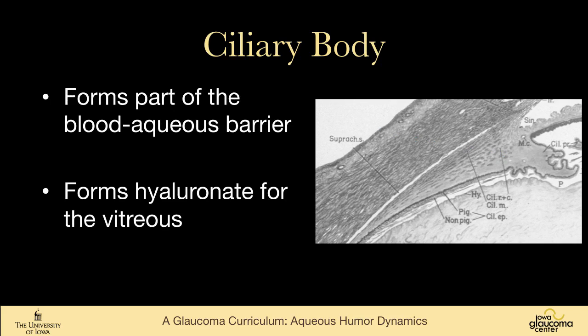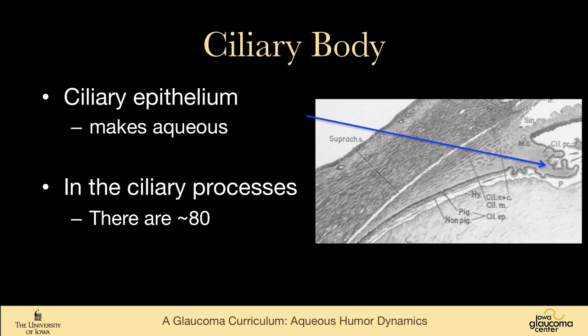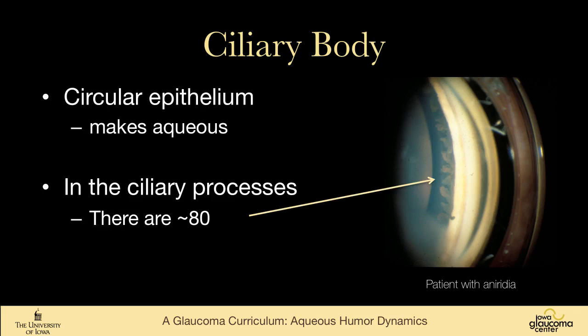The ciliary body is part of the blood-aqueous barrier, and it also forms hyaluronate for the vitreous. The ciliary epithelium makes the aqueous humor. It consists of ciliary processes, of which there are about 80. This is a slide of a patient with aniridia — in aniridic patients there's just a little stub of iris, but it gives you an uncommonly good view of these ciliary processes.